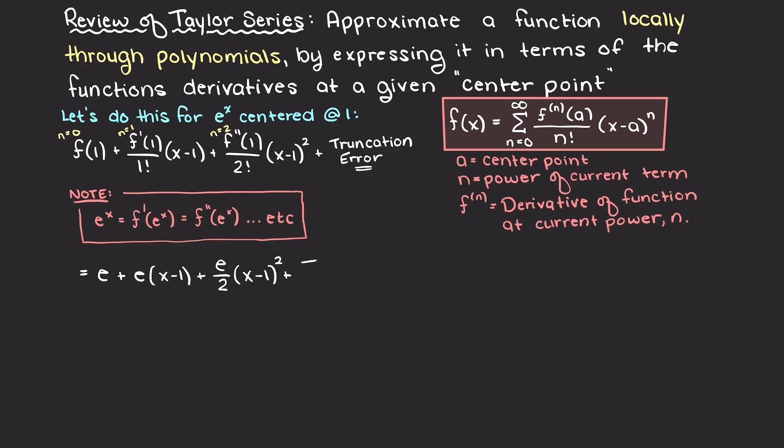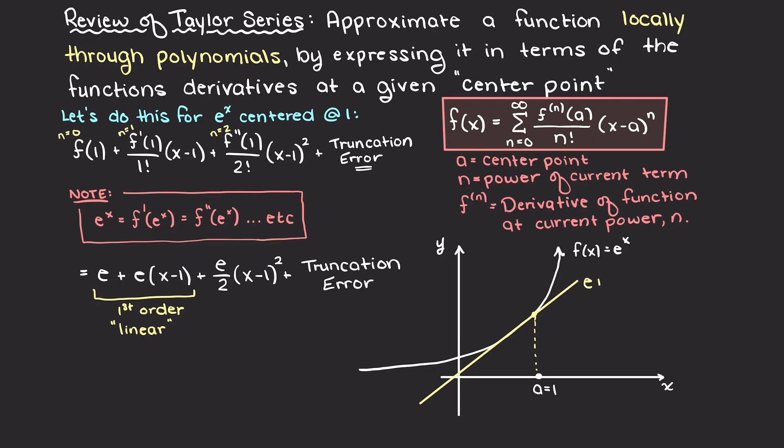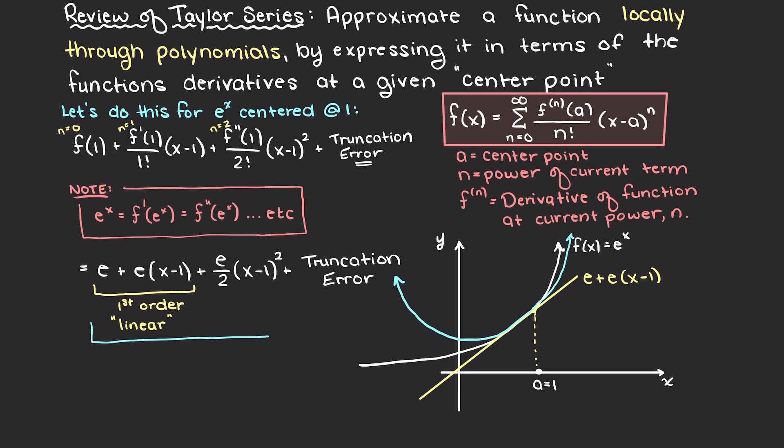Let's plot our actual e to the x function in the first and second order Taylor series approximations about the center point of 1. A first order expansion will just be the first two terms here, and that is a straight line. Secondly, our second order expansion is an even better approximation and it uses a parabola.